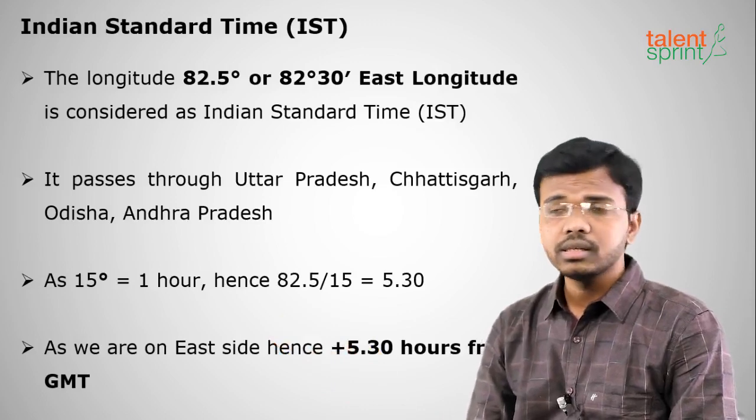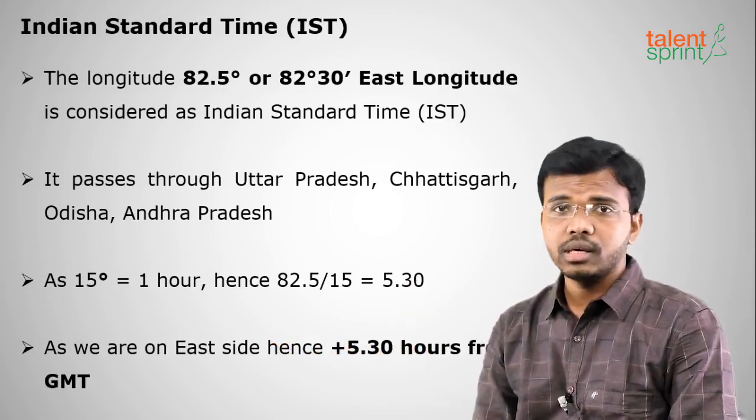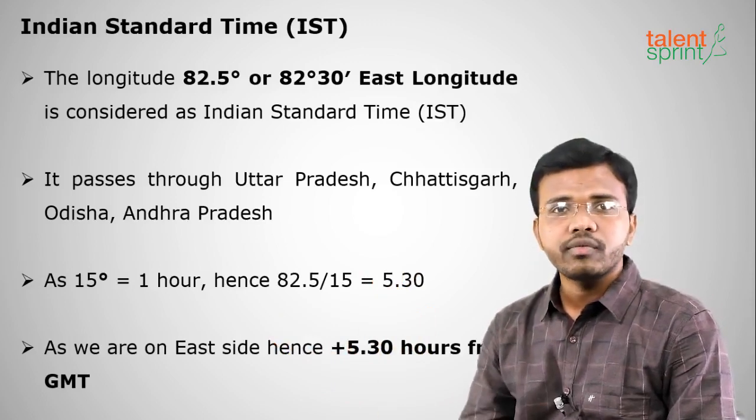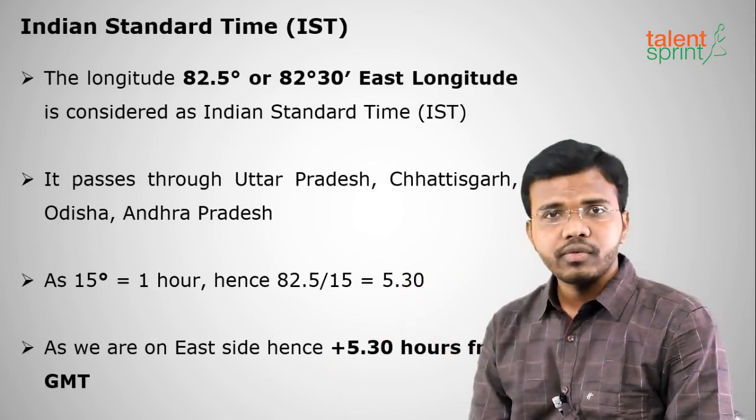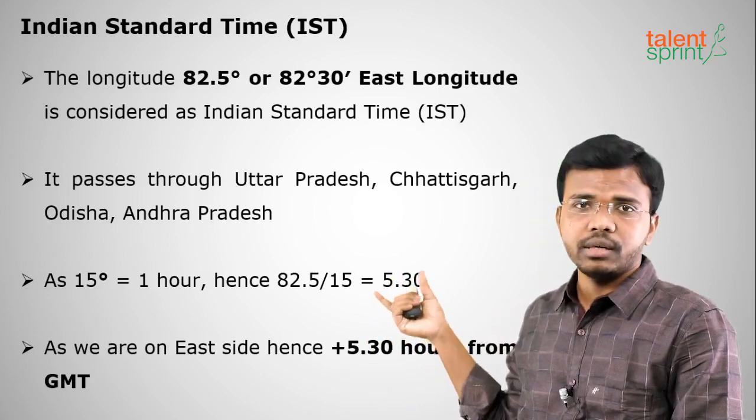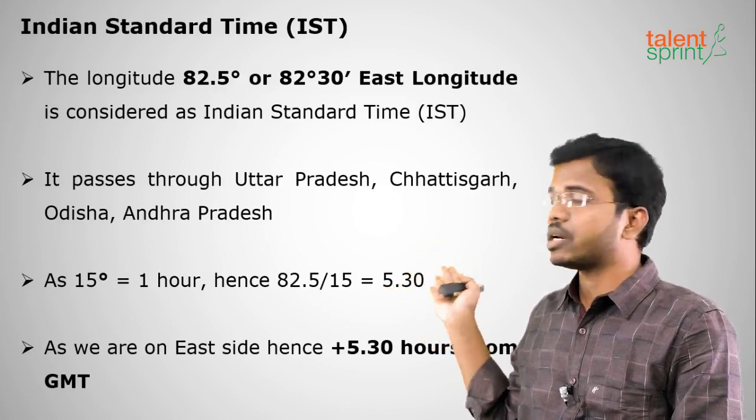That is why people in the northeast are asking for a new time zone. IST is calculated as 82.5° ÷ 15° = 5 hours 30 minutes. Since India is on the eastern side of GMT, we use UTC+5:30. This concludes Part 1 of Indian Geography. Hope you have learned enough in this part — we shall meet in the next part. Thank you.